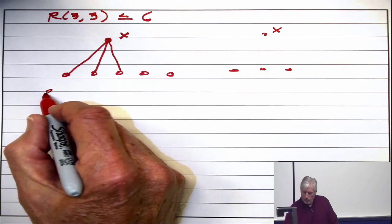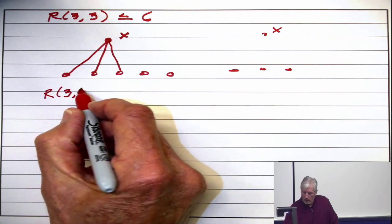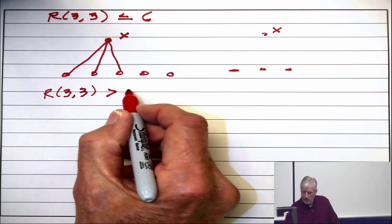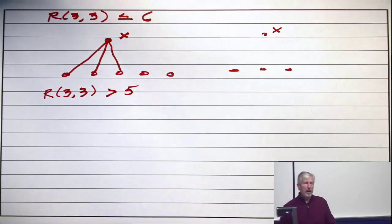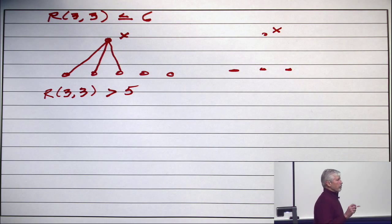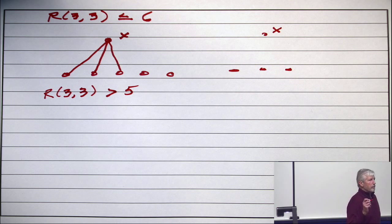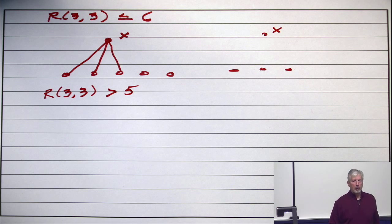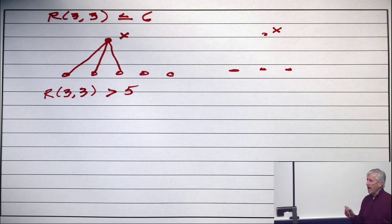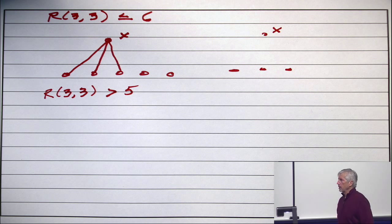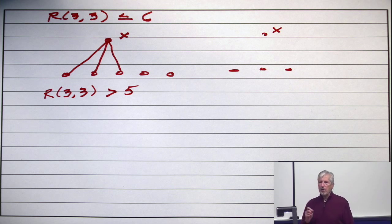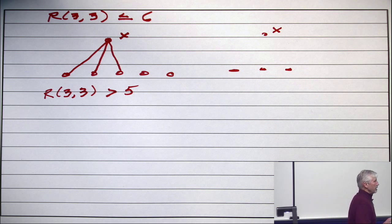Now, let's prove that it's bigger than 5. Here's my challenge to you. Find a graph on 5 vertices which has no K3 and no I3. Again, find a graph on 5 vertices which has no K3 and no I3. It is a graph we have studied many times.